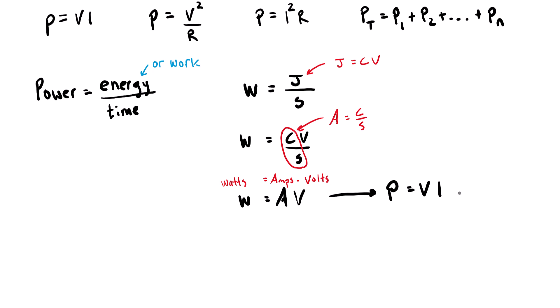You might also see this written as power equals VA. That's just referring to volts times amps. But that is how we get the first of the three formulas.